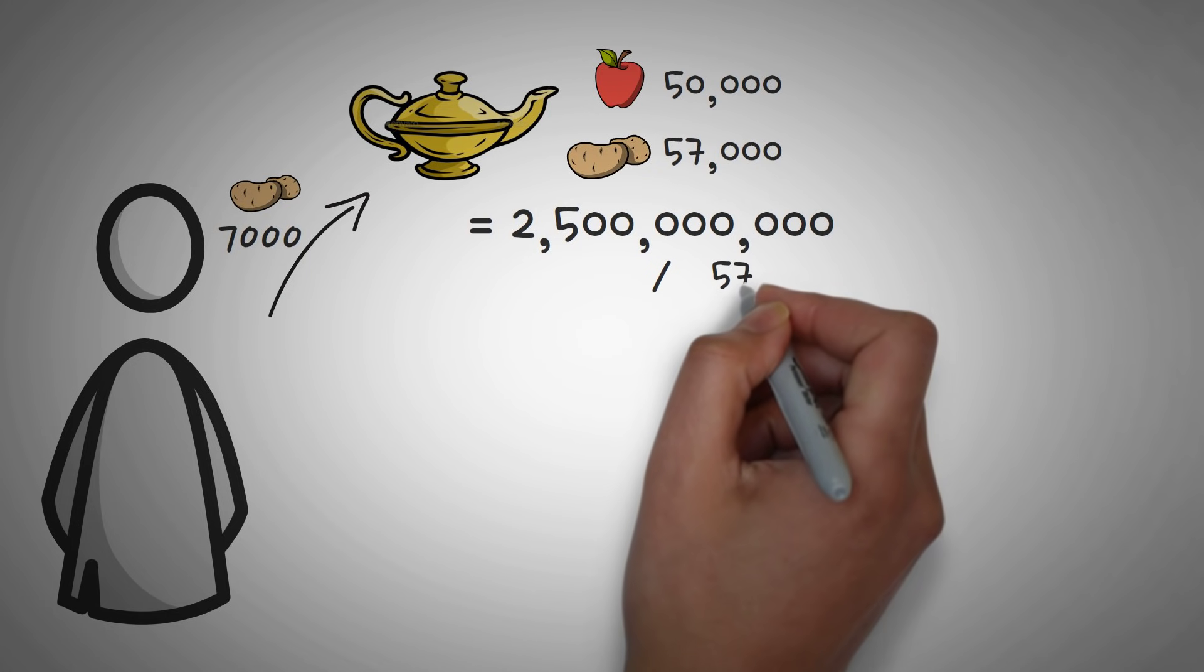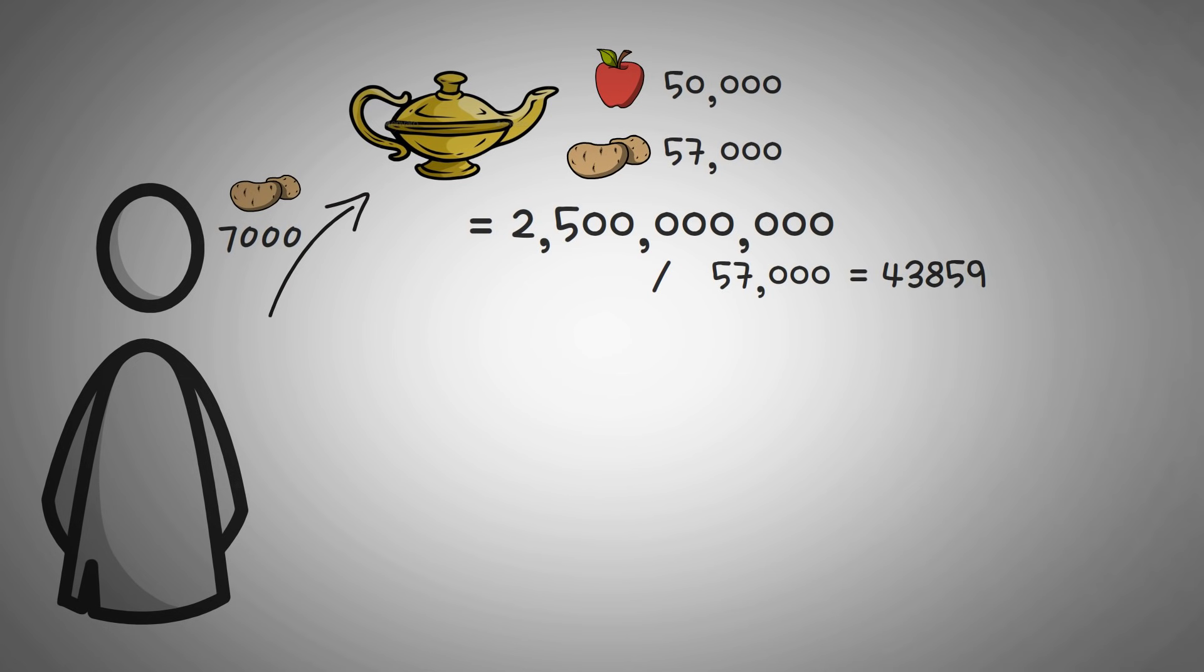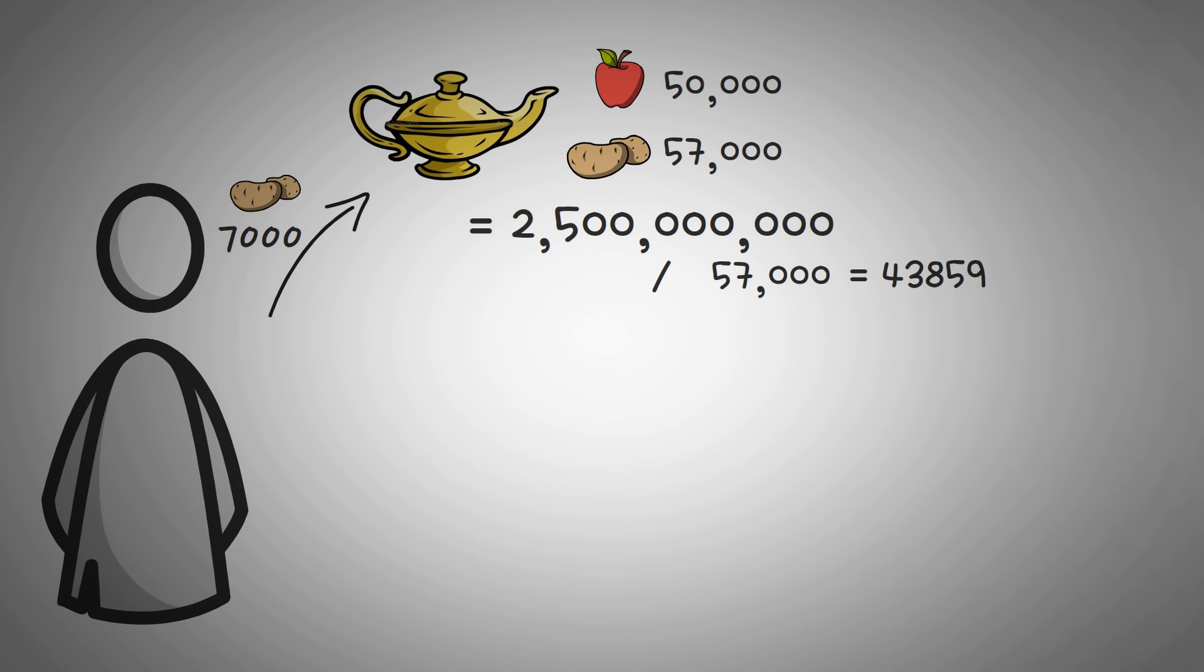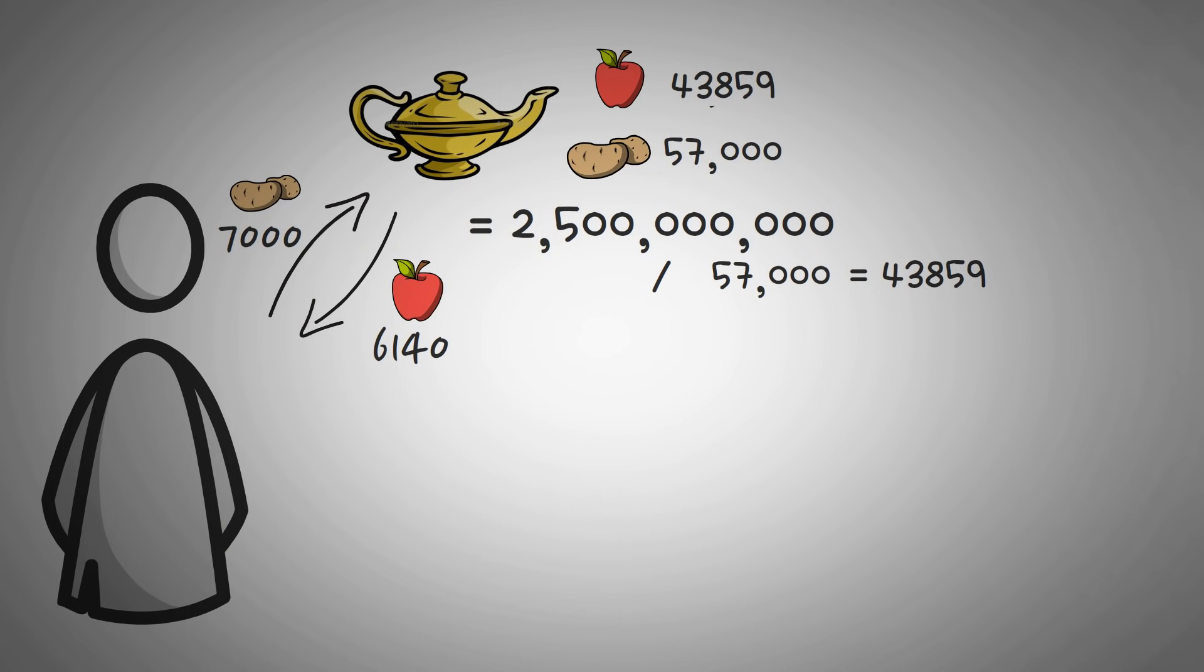So we take 2.5 billion, and we divide it by 57,000. You might be wondering why, well hopefully you'll see in a second. The answer we get to this math question is 43,859. So this is the number of apples that should be left over in the magical genie's lamp. However, right now there's 50,000. So we just need to find out the difference, and give the difference to the potato farmer. Well the difference is 6,140. So we give the potato farmer 6,140 apples.